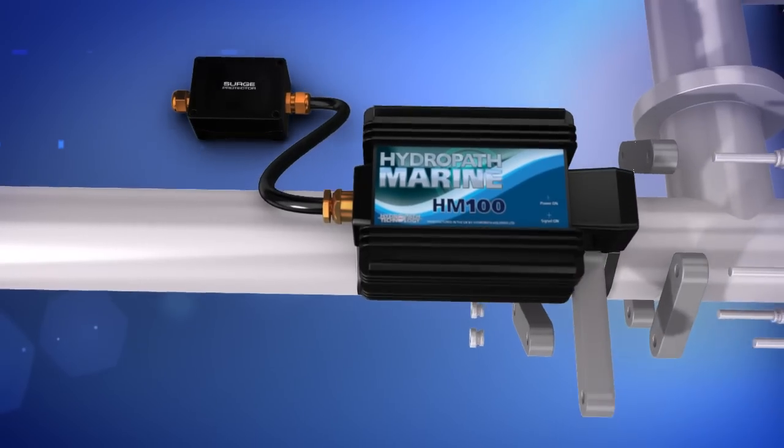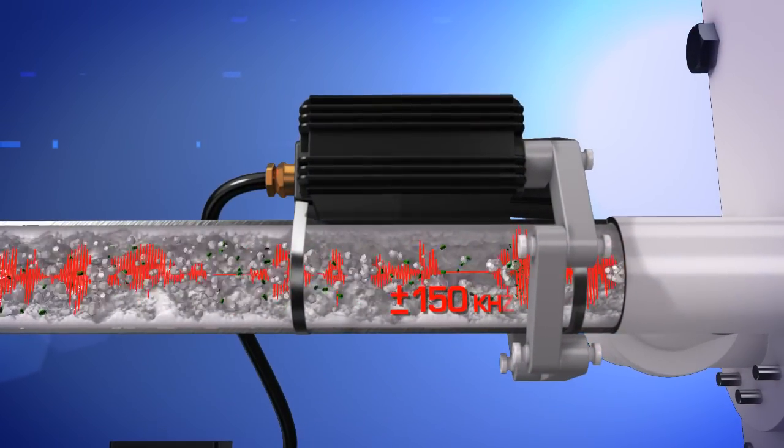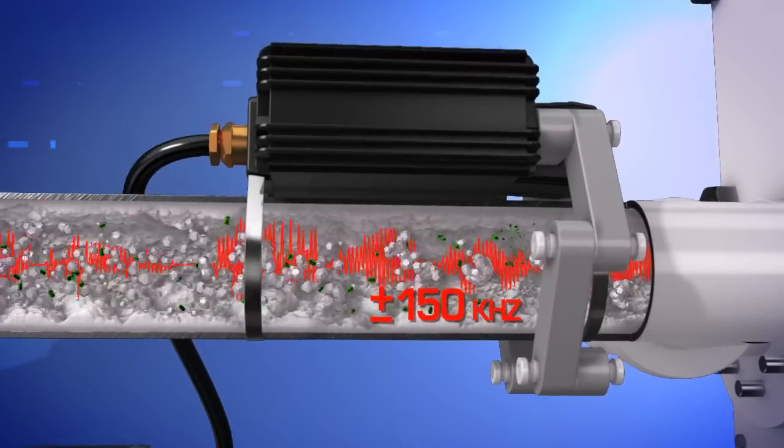The Hydropath marine water conditioner applies an electrical signal of 150 kHz throughout the piping system, causing the ions to form clusters.